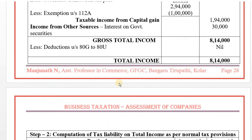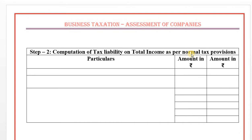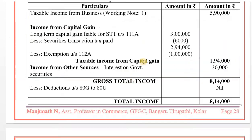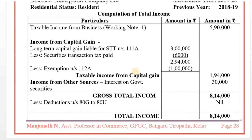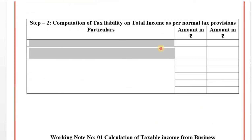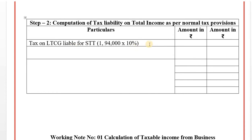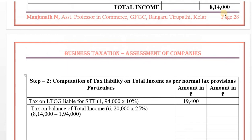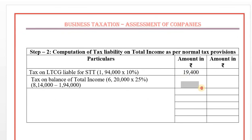Step 2: Computation of tax liability on total income as per normal provisions. Total income: Rs. 8,14,000. Long-term capital gain liable for STT: Rs. 1,94,000 taxed at 10% = Rs. 19,400. Balance of total income: Rs. 8,14,000 − Rs. 1,94,000 = Rs. 6,20,000. Turnover less than Rs. 250 crore, so 25% tax rate applies: Rs. 6,20,000 × 25% = Rs. 1,55,000. Total income tax: Rs. 1,55,000 + Rs. 19,400 = Rs. 1,74,400.